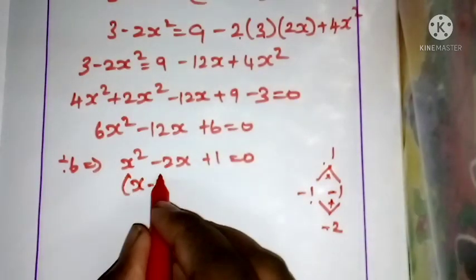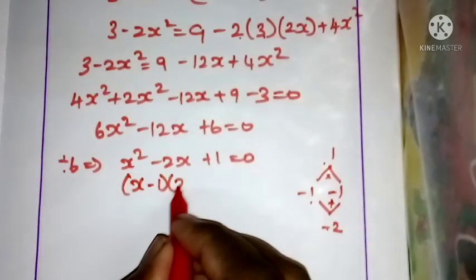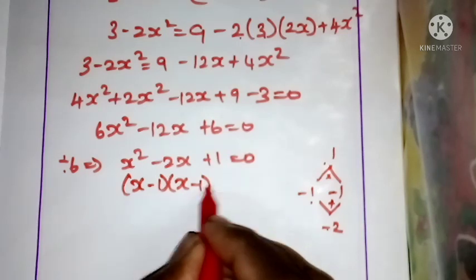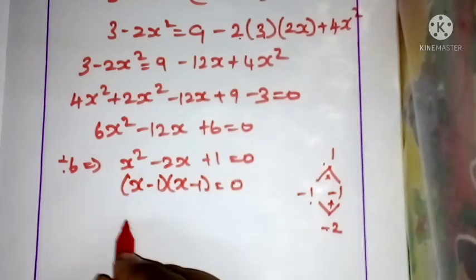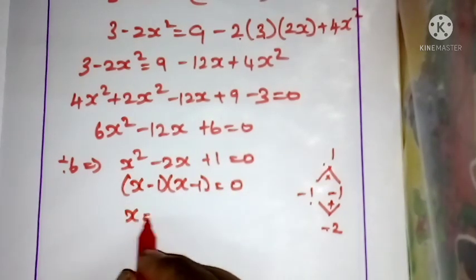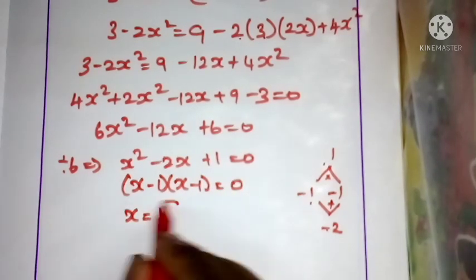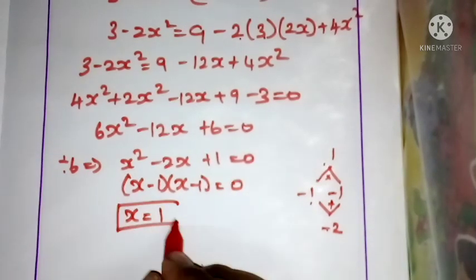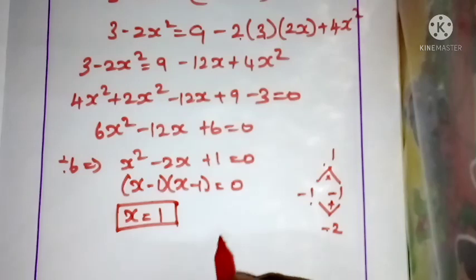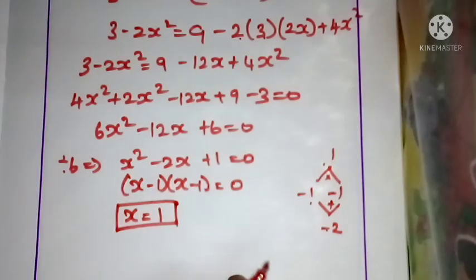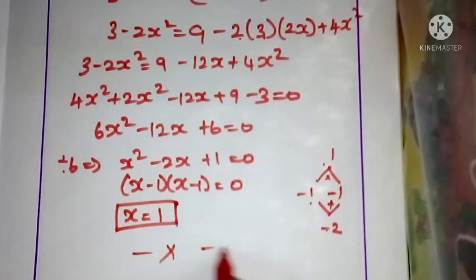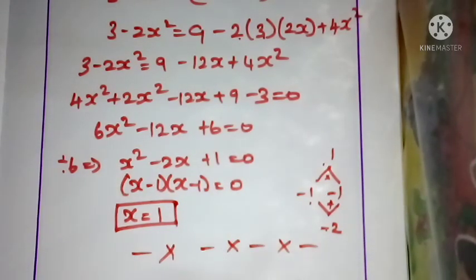So (x minus 1)(x minus 1) equals 0, which gives x equals 1. Thank you. Subscribe to A3 Education.